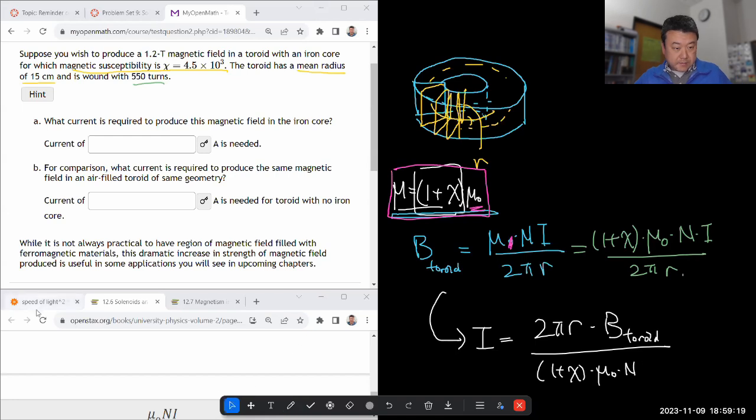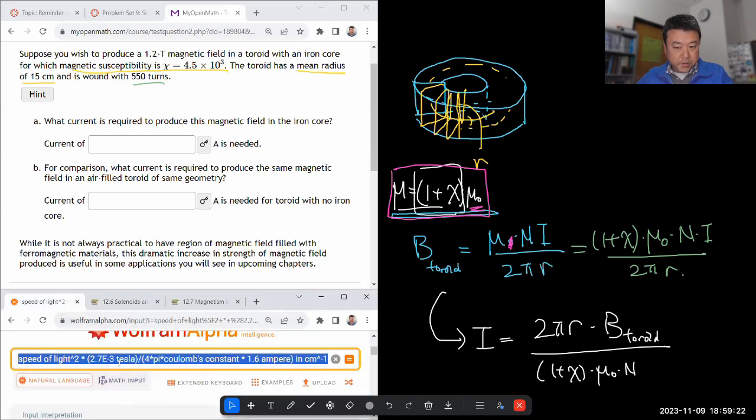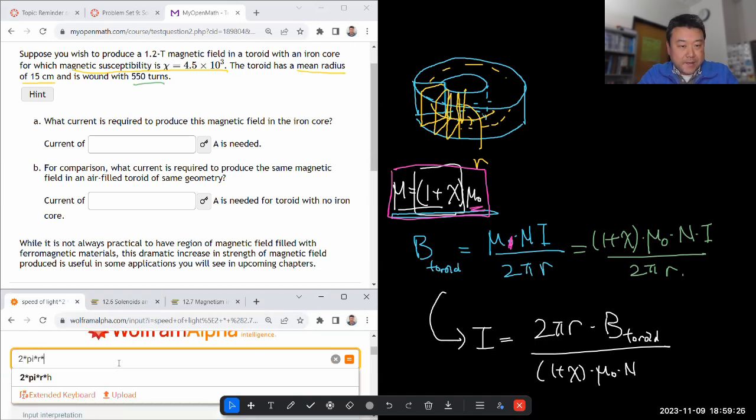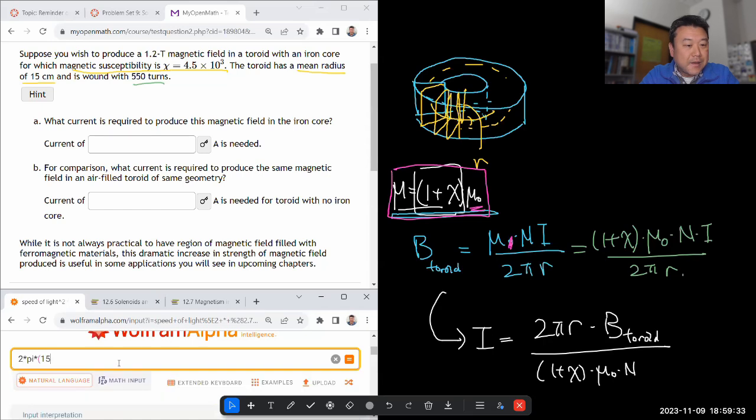Let's plug in the numbers and get the numerical value. 2 times pi times r times magnetic field inside the toroid, 1.2 tesla. Wow, that's a large field. Radius is 15 centimeters times 1.2 tesla divided by. And what will help is actually this large magnetic susceptibility, 1 plus. Oh, I could even ignore the one. 4.5 times 10 to the power of 3, no units. Let me make sure I have a big parenthesis around that. Times the magnetic constant.